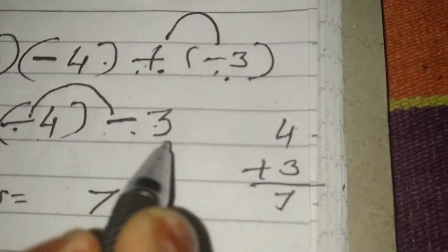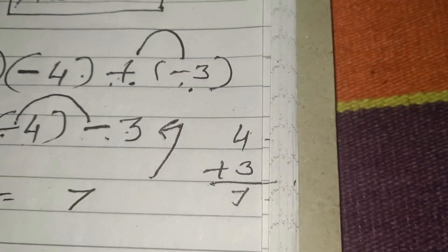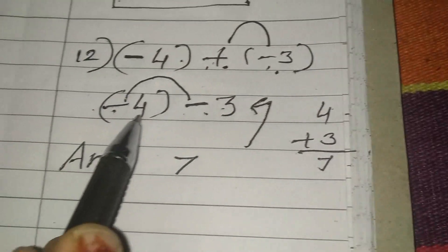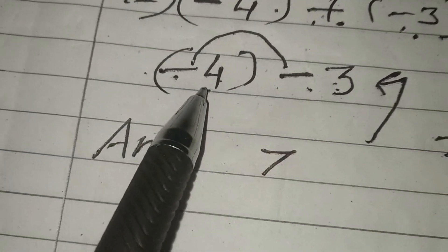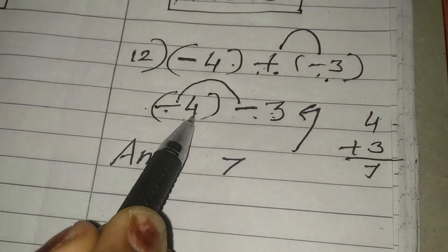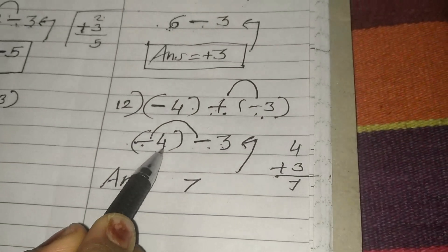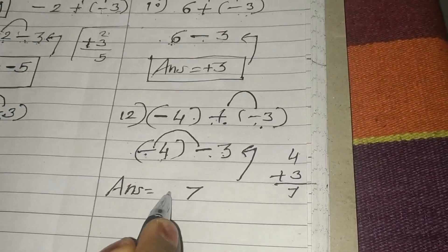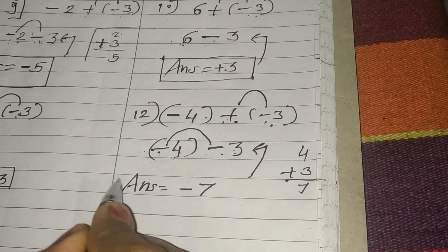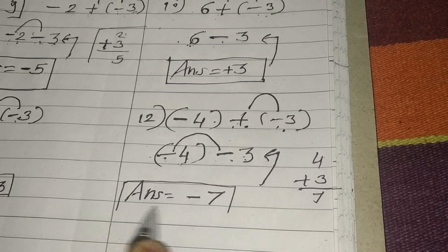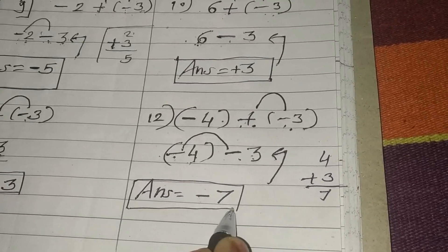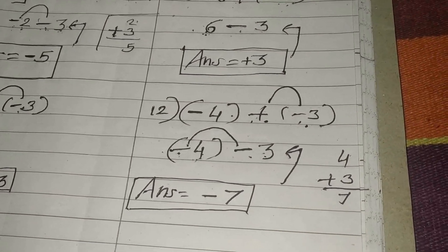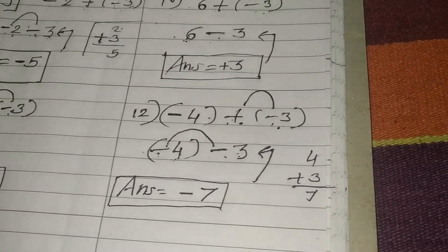Now for the sign of that answer, go to this step. From 4 and 3, the big number is 4. What is the sign of 4? Minus. So the answer sign is also minus. Hope you understand. We have solved a number of problems.